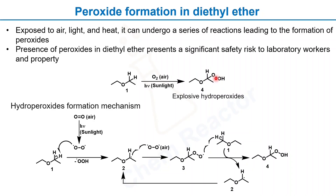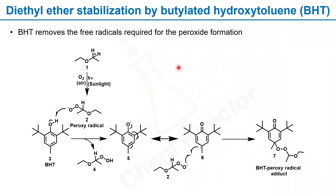So how do we stop the formation of explosive hydroperoxide in diethyl ether? There are many radical scavengers available in the market, but the most common one is butylated hydroxytoluene, called BHT, which removes the free radicals required for peroxide formation. The peroxy radical of diethyl ether abstracts the hydrogen radical from BHT molecules, releasing the diethyl ether peroxy molecule along with a BHT radical.